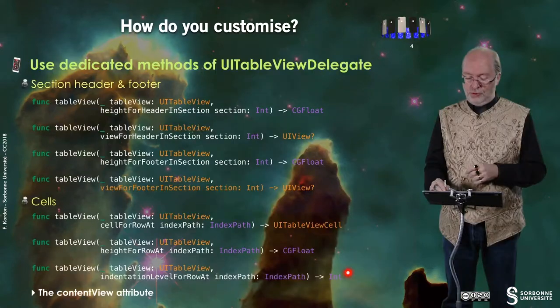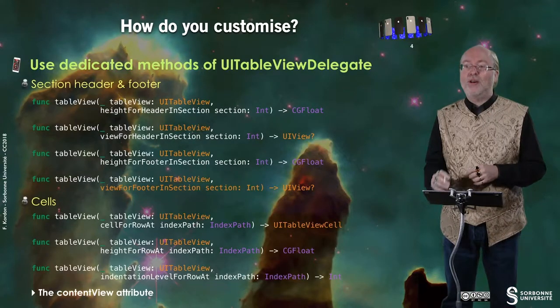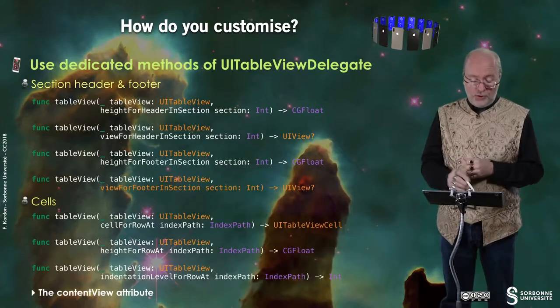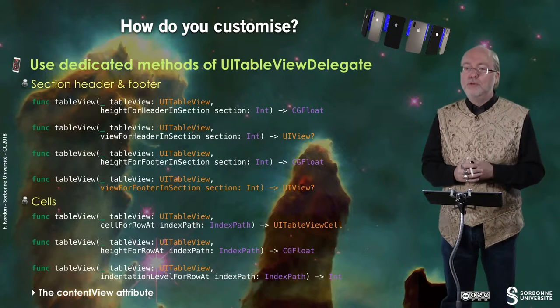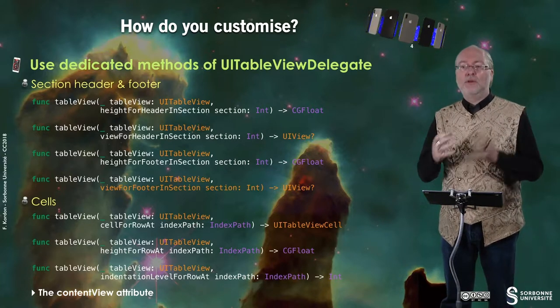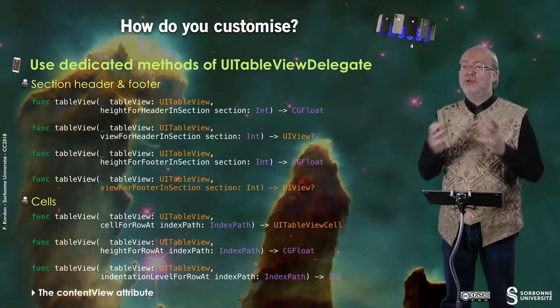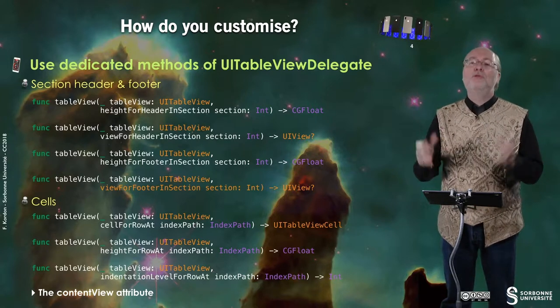You can have cells that start at the extreme left of your device, or you can introduce some deviation — you specify it as an integer to add indentation to your cells. In fact, you even have an attribute called ContentView that can describe a cell with a totally custom view if you need that.